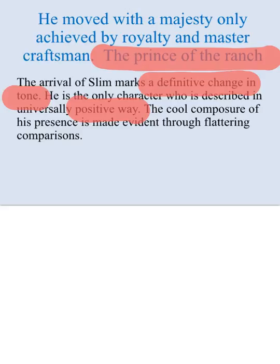We have sympathy for George, but he's not seen as universally positive - he speaks harshly to Lenny in chapter one and calls him a poor bastard. We have sympathy for Lenny, but we can understand how Lenny can be deceitful - he lies to George about the mouse in his pocket. But none of those negative traits are linked to Slim. Steinbeck changes his style by using flattering comparisons when describing Slim: 'He moves with a majesty achieved by royalty and master craftsman.' He wants the reader to understand that Slim is a universally positive character, different from everybody else on the ranch.